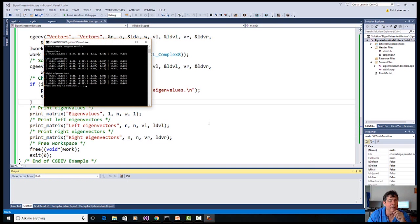So there you have it. It shows you the eigenvalues, it shows you the left eigenvectors, and the right eigenvectors. So it's pretty easy to use Intel's math kernel library to do things similar to this.